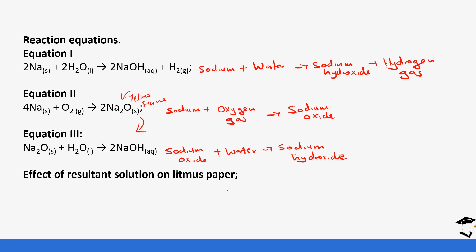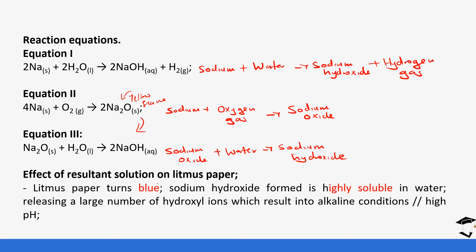Finally, regarding the resulting solution tested with litmus paper: it turns the red litmus paper blue because it produces hydroxide ions in solution, making it basic in nature. The word we use — which we also used with potassium — is alkaline. Alkaline refers to bases that are soluble in water.